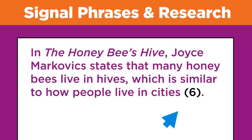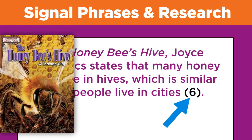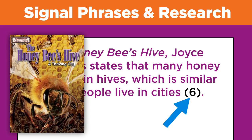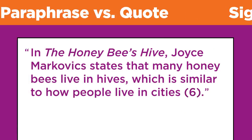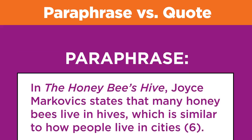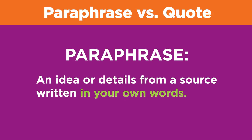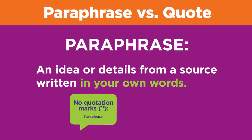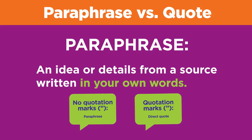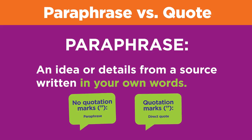The number in parentheses tells the reader that this idea appeared on page 6 of Markovic's book. Because there are no quotation marks around the idea, we know that it is a paraphrase and not a direct quote. A paraphrase is an idea or details from a source written in your own words. No quotation marks are needed around a paraphrase. In contrast, a direct quote has the exact words from a source — you must include quotation marks around it.